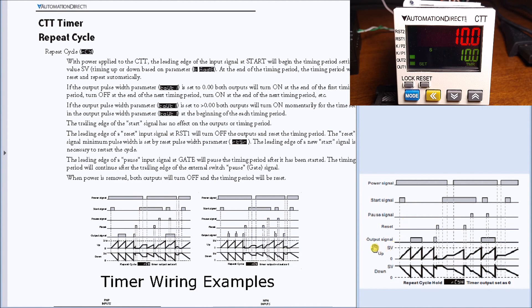If we have the output signal on continuously, that being that it's set for 0.00 seconds, what will happen is the output itself will cycle on for the time duration and then off for the time duration and on for the time duration. So it's a cycle, a repeat cycle.